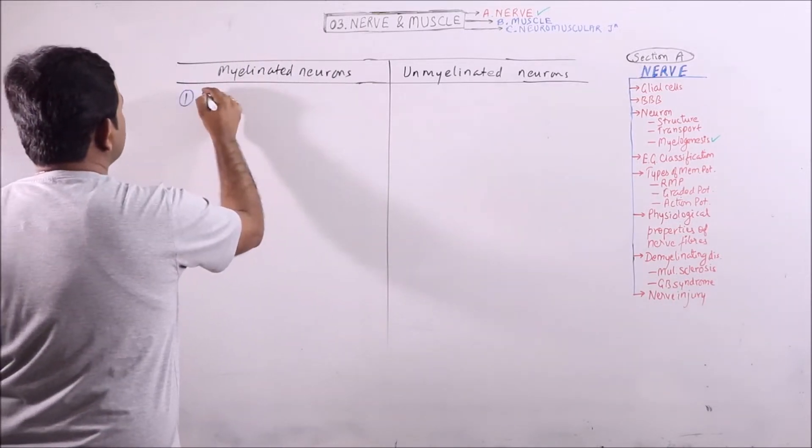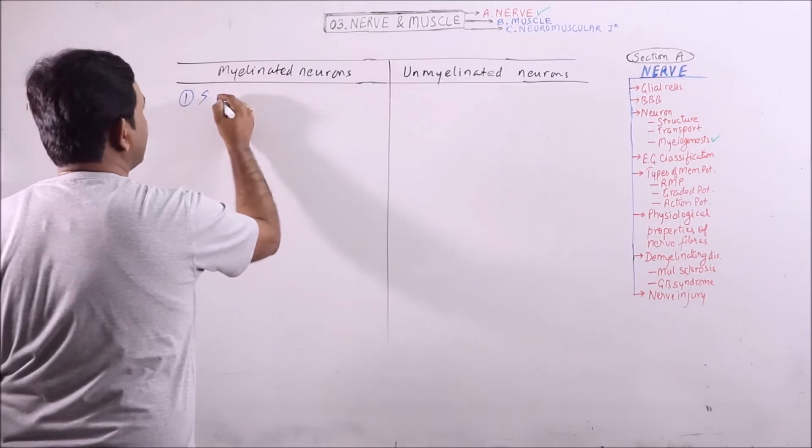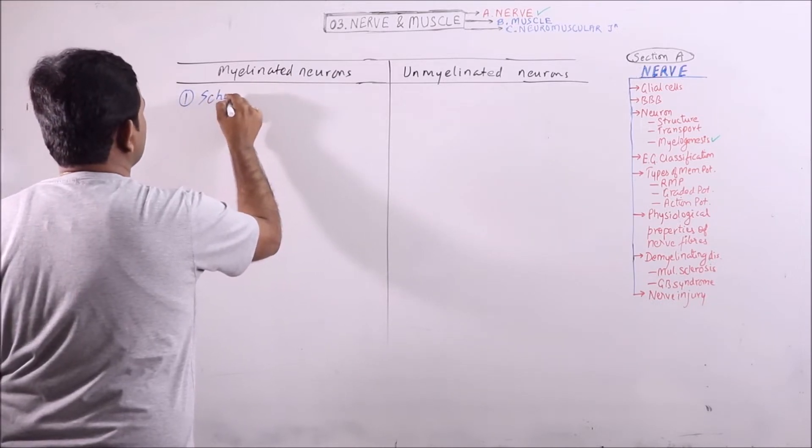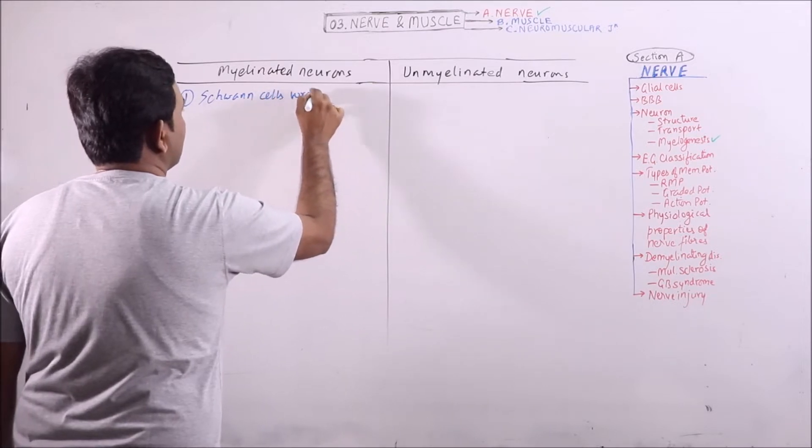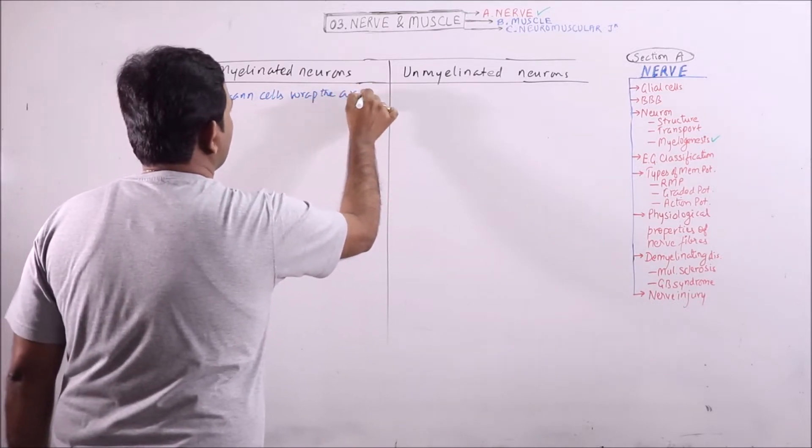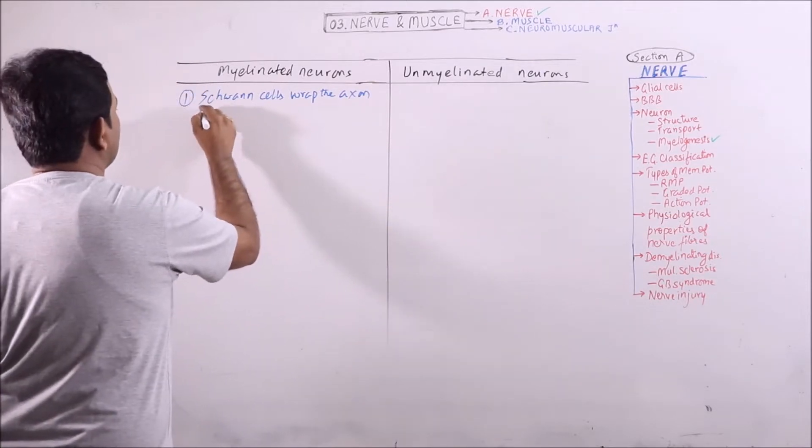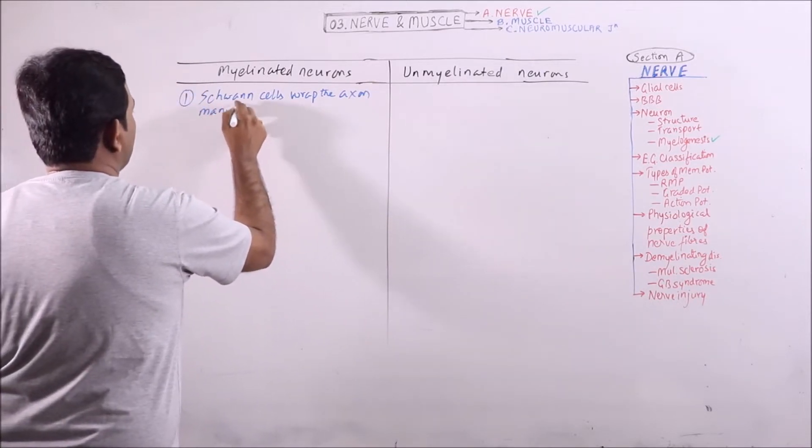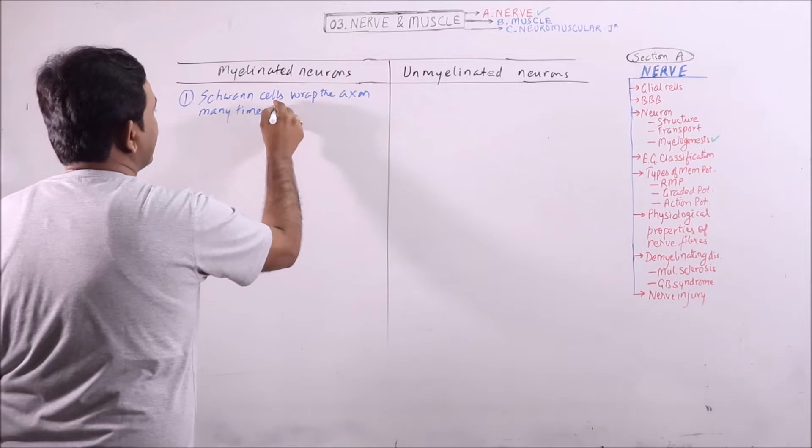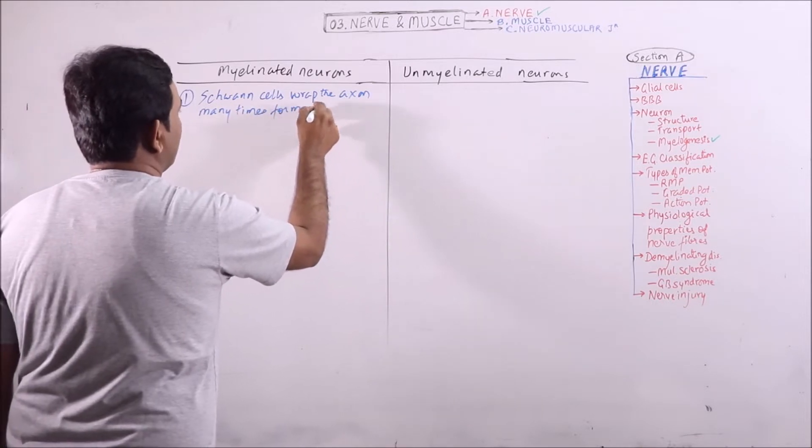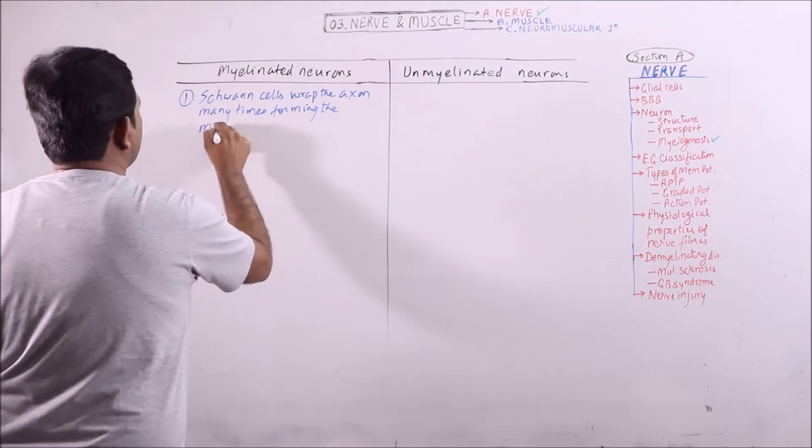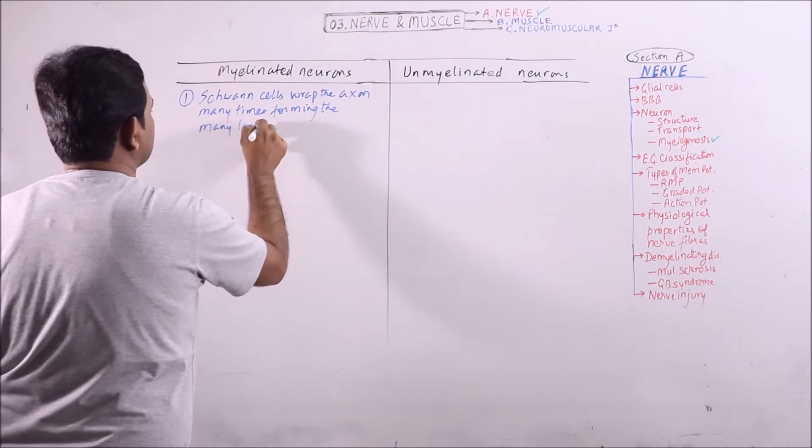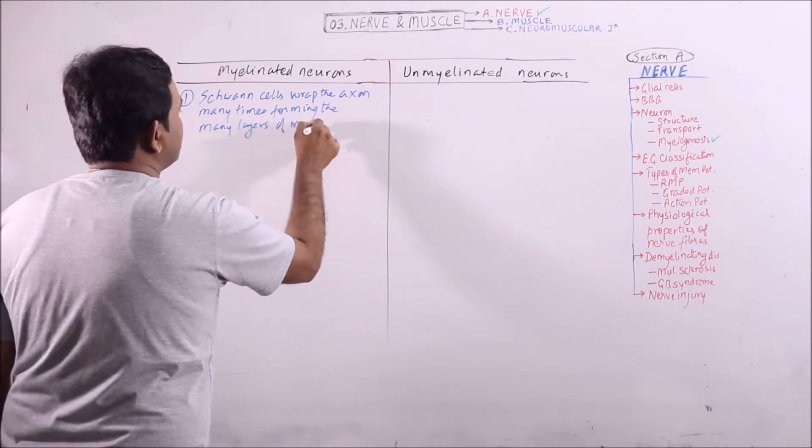In myelinated neurons, we are taking the myelinated neurons of PNS. Schwann cells wrap the axon many times, forming many layers of myelin sheath.